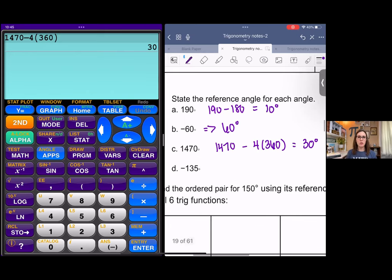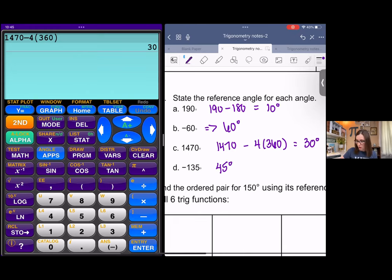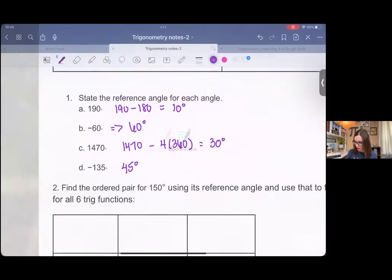And then negative 135. If you remember from a previous video, I mentioned that anything ending in five is going to be reference angle for 45. So I could just say 45 degrees or you can do negative 135 plus 180. I try to stay in that first quadrant because that's kind of your bread and butter there. It's easier to remember one quadrant than it is to remember all four.